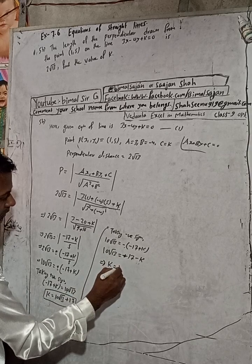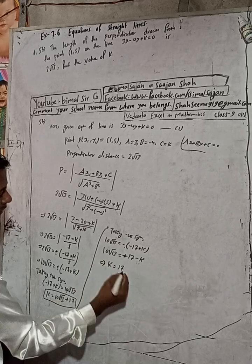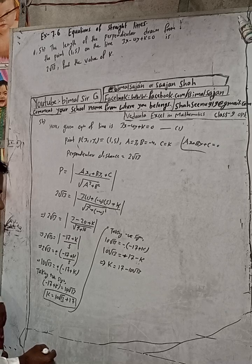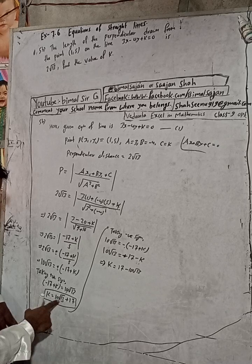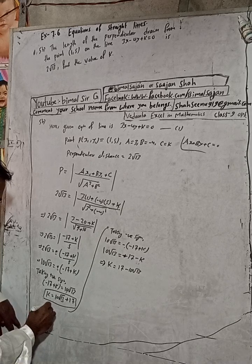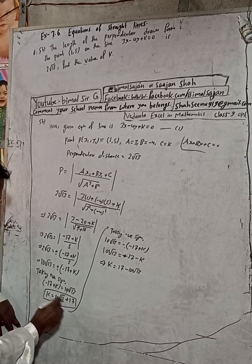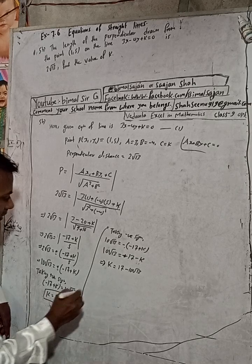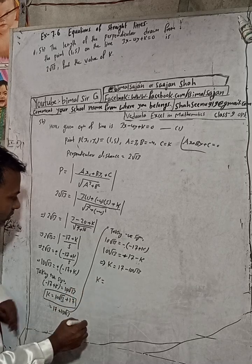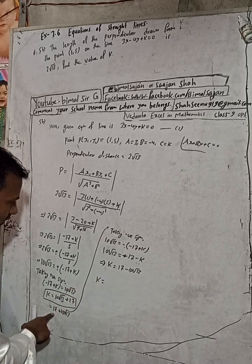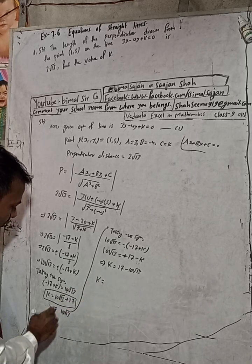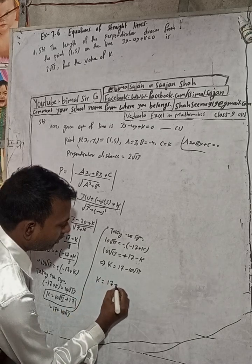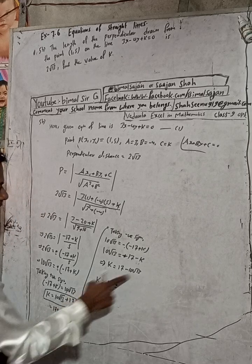So from the negative case, k equals 17 minus 10√13. Combining both cases, we can write the final answer: k equals 17 plus or minus 10√13.